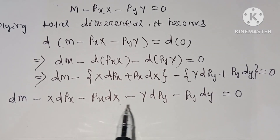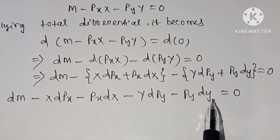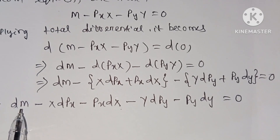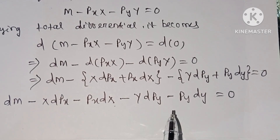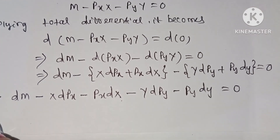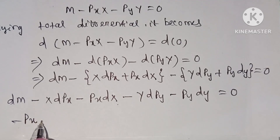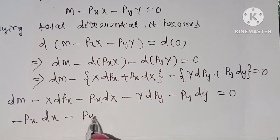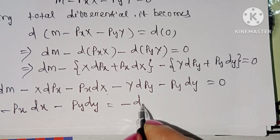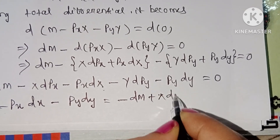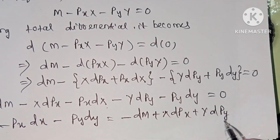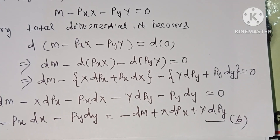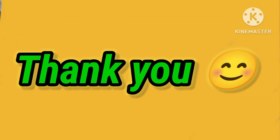Taking minus px·dx and minus py·dy to the left-hand side and dm, x·dpx, and y·dpy to the right-hand side, it becomes minus px·dx minus py·dy equal to minus dm plus x·dpx plus y·dpy. This is equation number six. The rest of the derivation will be discussed in the next video. Thank you, have a nice day.